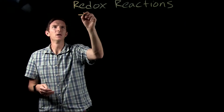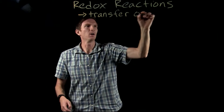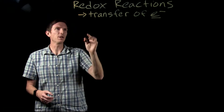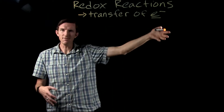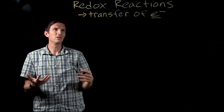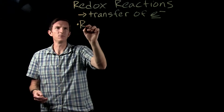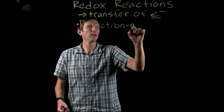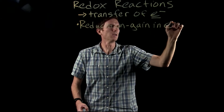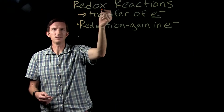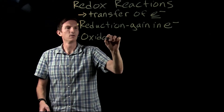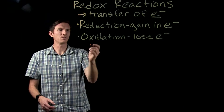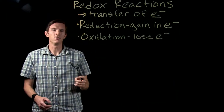A redox reaction is a reaction where we have a transfer of electrons. We're going to have something lose electrons and give them to something that's gaining electrons. We call it redox because we have reduction occurring — that is a gain of electrons — and oxidation, where something loses electrons, which then go to whatever is being reduced.